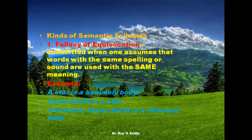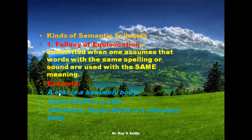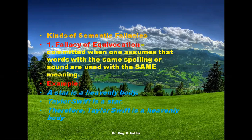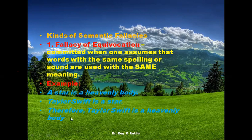The word 'star' has a different meaning in each proposition. In the first, 'star' means a physical celestial body — like the sun, moon, or any star in the sky. In the second, Taylor Swift is called a star in the sense of a celebrity. Since Taylor Swift is from earth, you cannot conclude she is a heavenly body. The two uses of the word 'star' are equivocal — hence the fallacy.